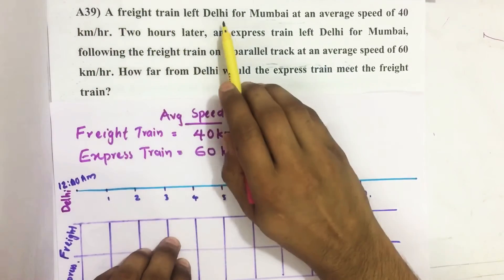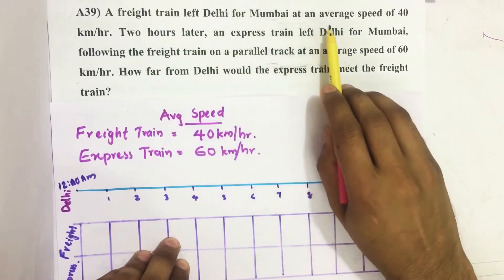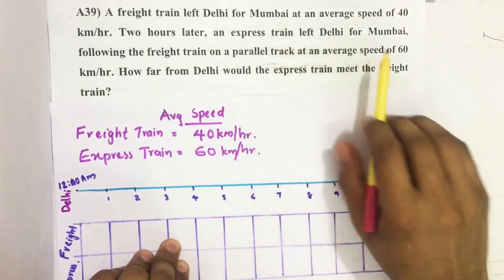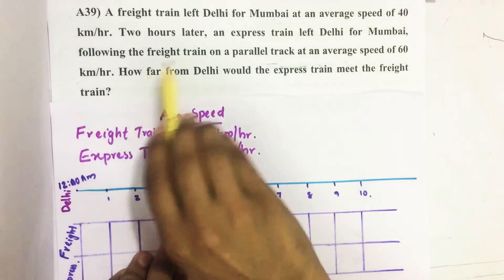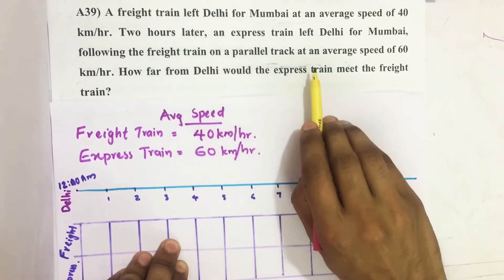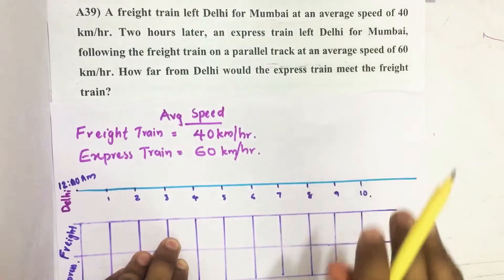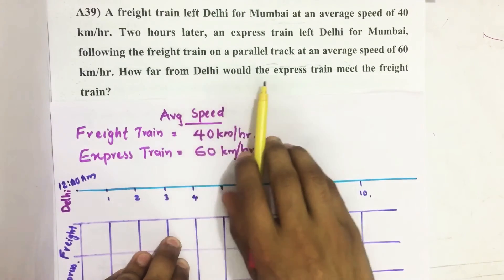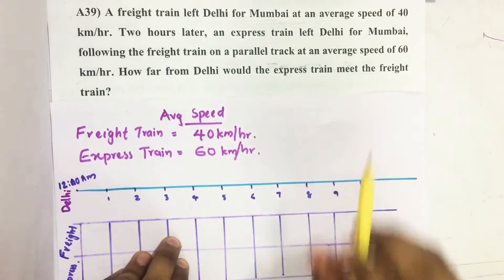A freight train left Delhi for Mumbai at an average speed of 40 km per hour. Two hours later an express train left Delhi for Mumbai following the freight train on a parallel track at an average speed of 60 km per hour. How far from Delhi would the express train meet the freight train?